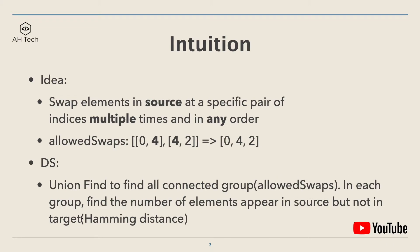Within each connected group, we find the number of elements that appear in the source array but not in the target array. That count will be the minimum Hamming distance we can achieve. Now let's look at the code.